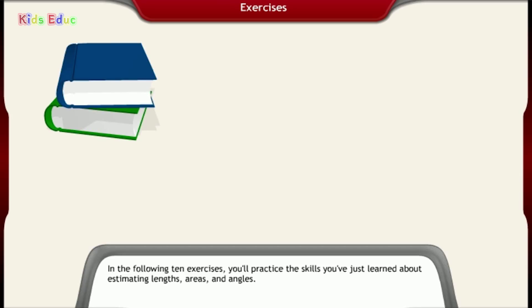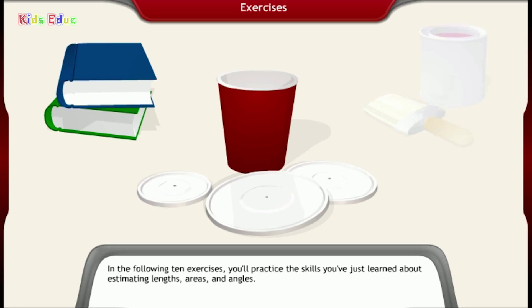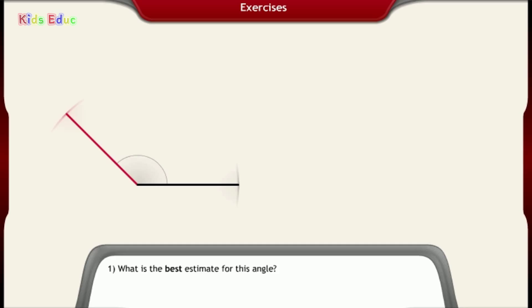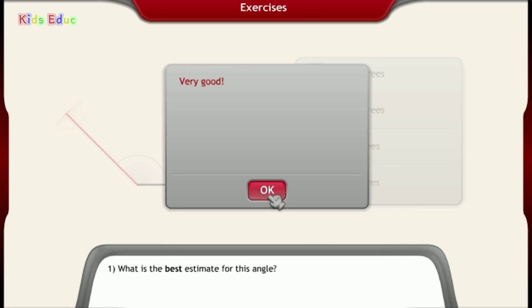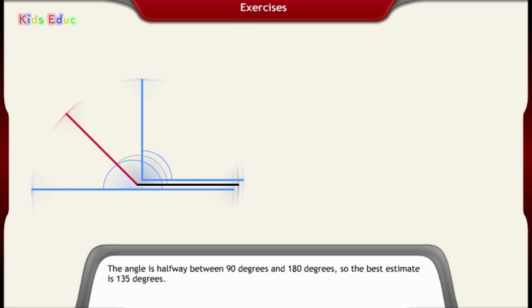In the following 10 exercises, you'll practice the skills you've just learned about estimating lengths, areas, and angles. Number 1, what is the best estimate for this angle? 170 degrees. The angle is halfway between 90 degrees and 180 degrees, so the best estimate is 135 degrees.